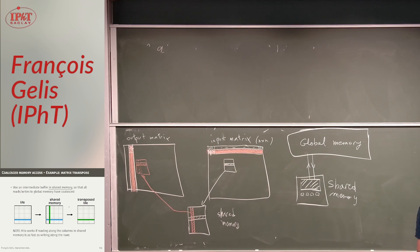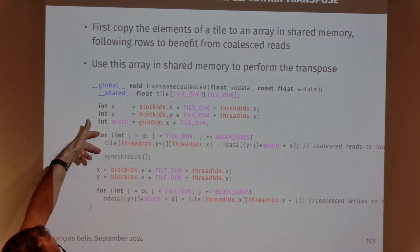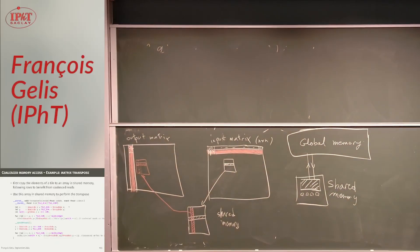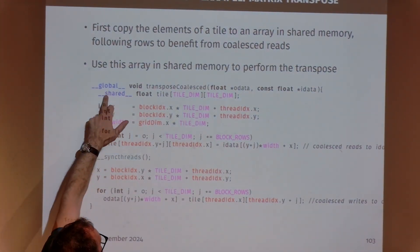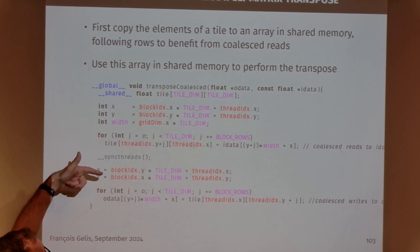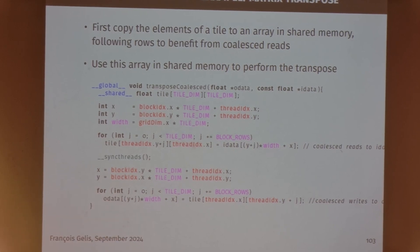Let's see how this performs. The code reads the input matrix and writes it to shared memory - a tile declared as shared memory of tile size. Then you synchronize, read along the columns of the shared memory array, and copy to the output. In my example, the full matrix was 1024 by 1024 and the tiles were 32 by 32, so they fit easily in shared memory.